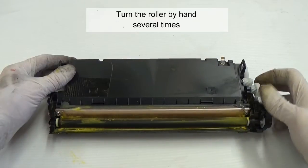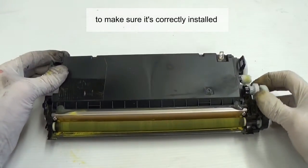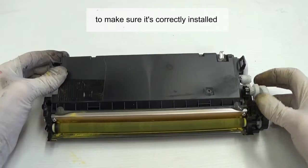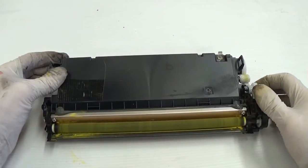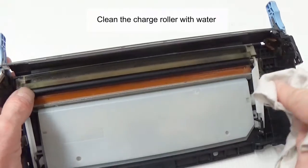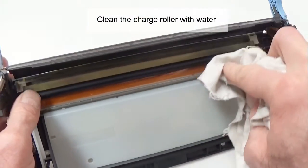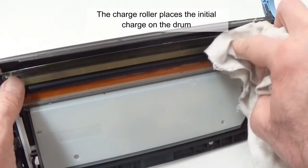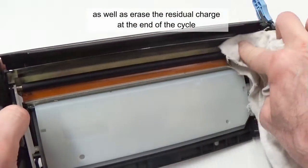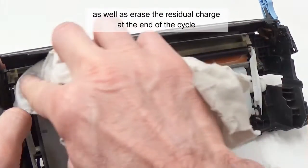Turn the roller by hand several times to make sure it's correctly installed. Clean the charge roller with water. The charge roller places the initial charge on the drum as well as erases the residual charge at the end of the cycle.